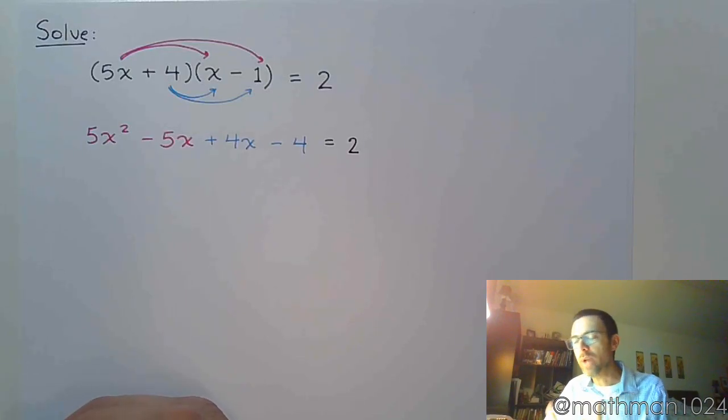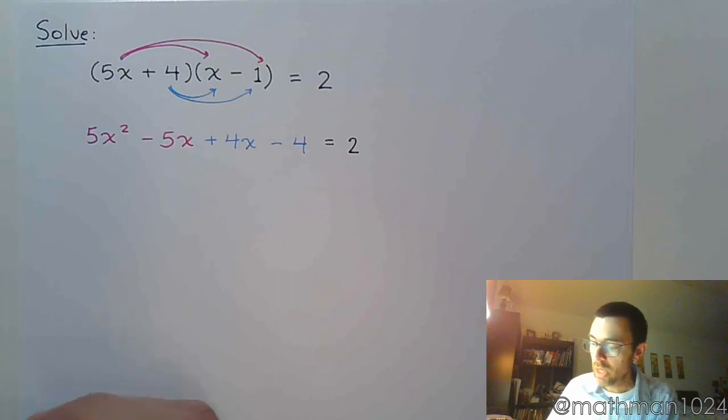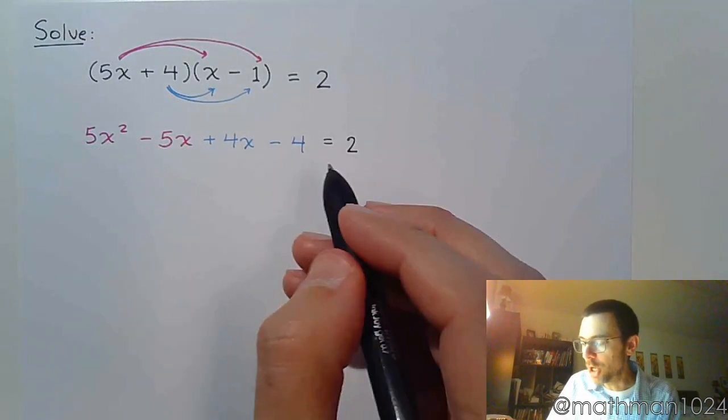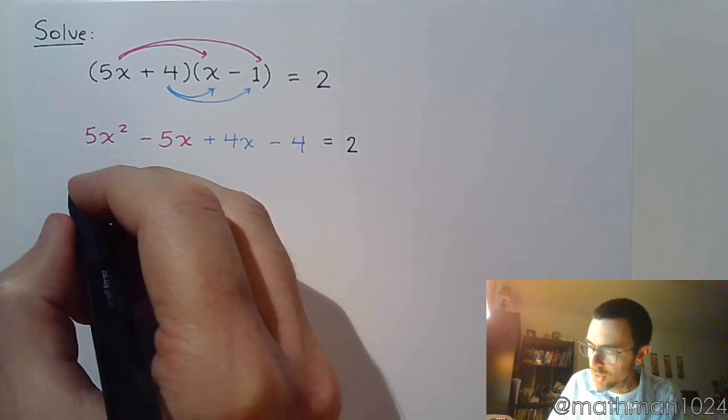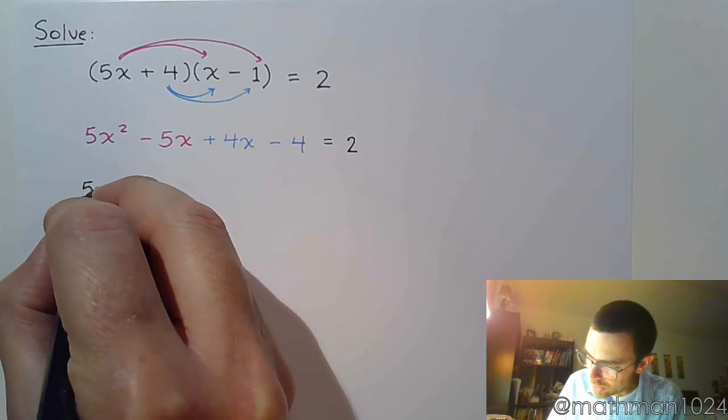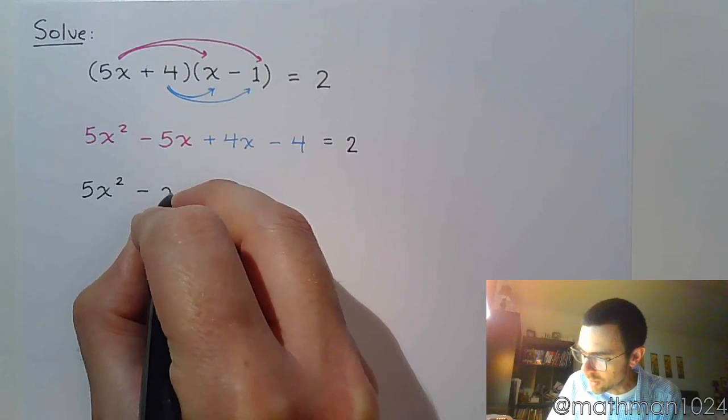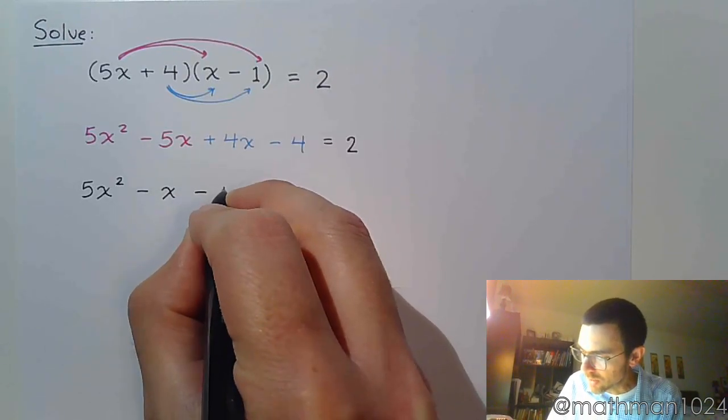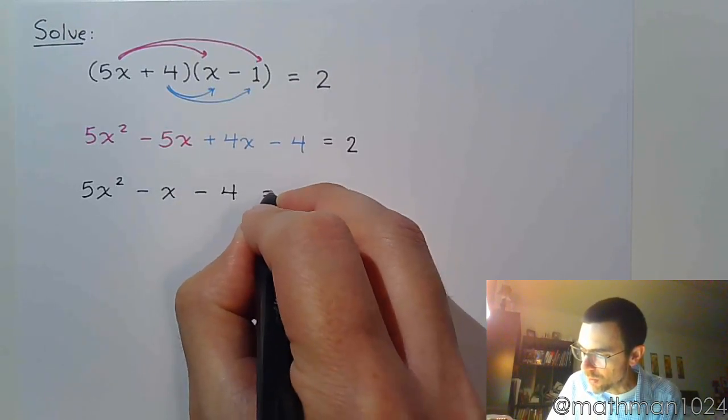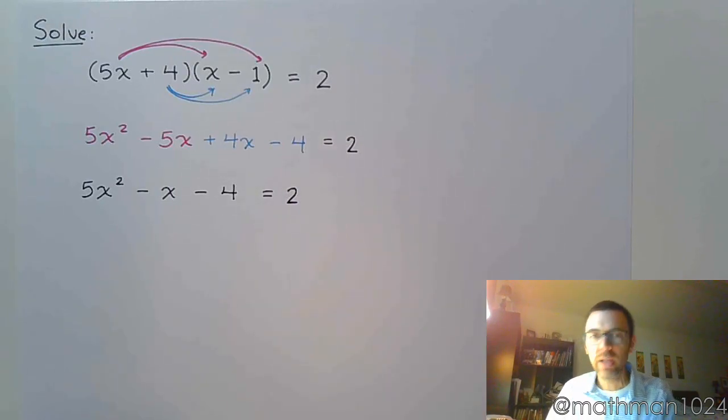And so now you see that if I need to subtract the 2 over, there's plenty of room for it. There's a place for it to go. You've got a couple things you can do here. You can go ahead and move the 2 over, or you could take the time and go ahead and combine these terms from the middle. So 5x squared minus x minus 4 is equal to 2.